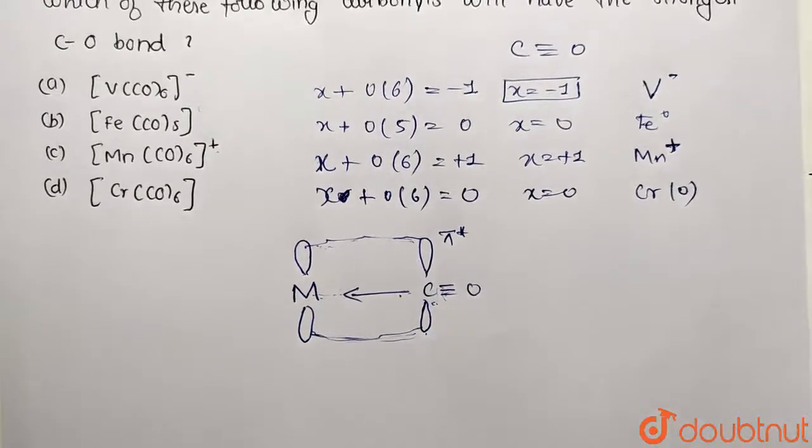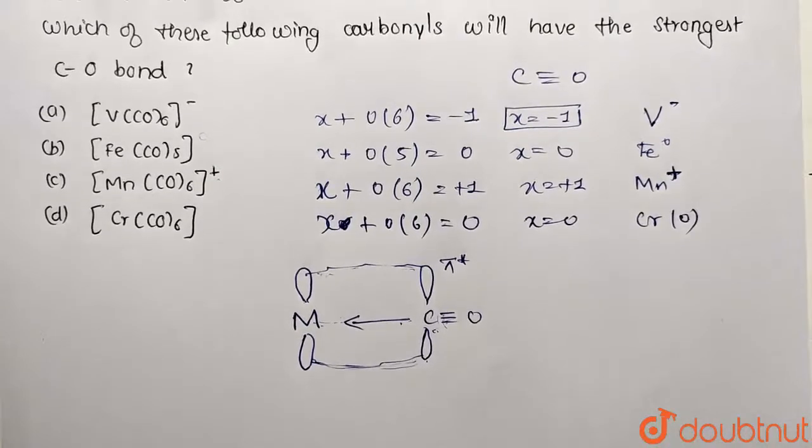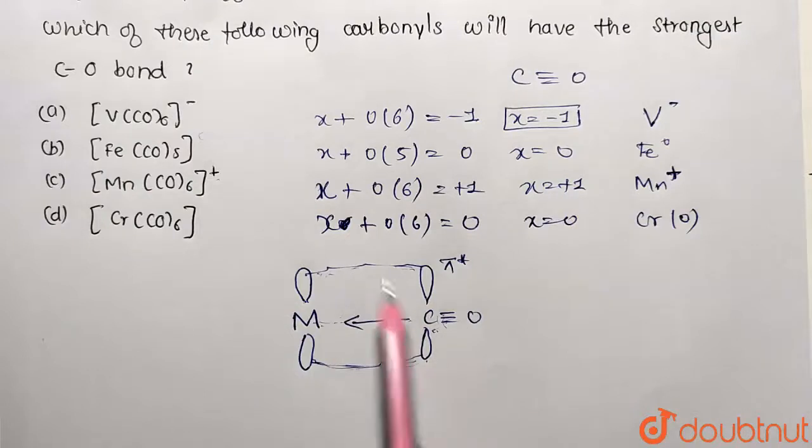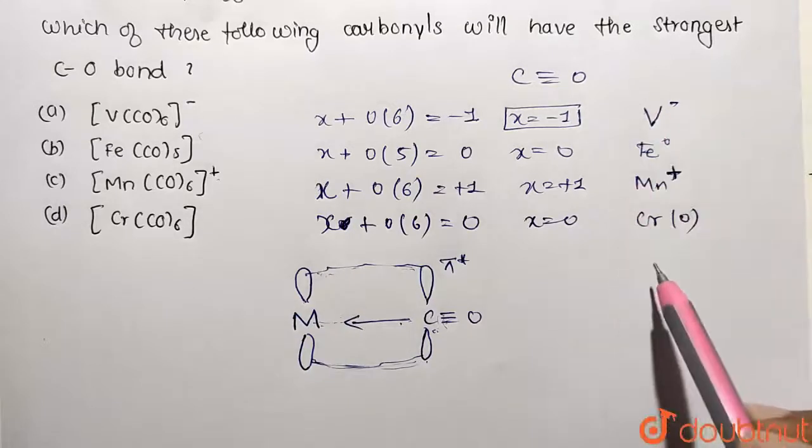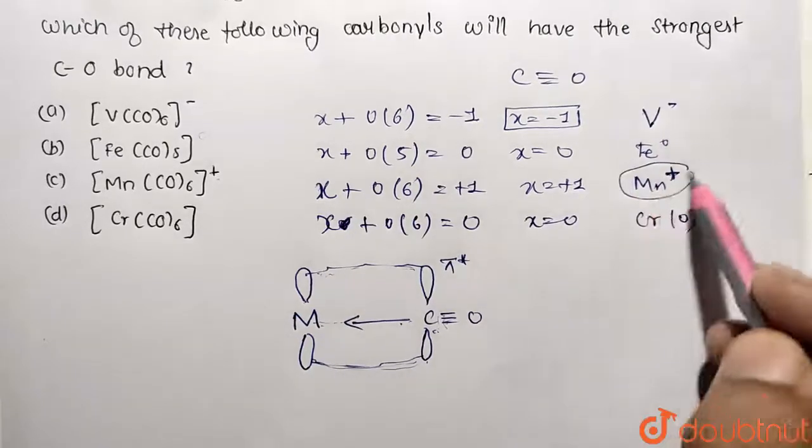But in question we were asked what? We need to find for the strongest CO bond. So strongest CO bond will be in that case where we are going to have minimum synergic bonding. So let's search for the complexes which are going to show minimum synergic bonding. So it is going to be Mn positive.